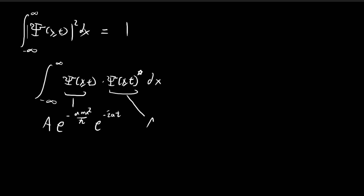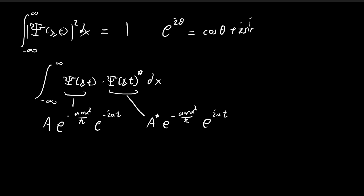Once you take the conjugate, the conjugate of A appears, the real Gaussian term is unchanged since conjugates only affect imaginary terms, and the complex exponential term flips sign — the negative iωt becomes positive iωt. You can verify this using the standard conjugate relationship. These two exponential terms are inverses of each other, so when multiplied together they equal 1.